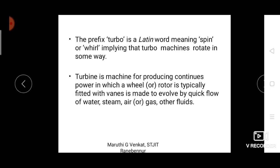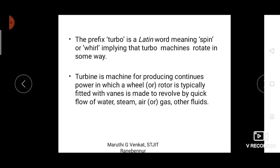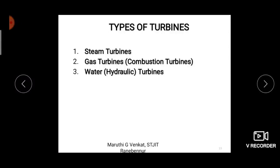The word turbine is derived from the Latin word 'turbo' which means spin or wheel, meaning turbines are machines which produce rotational motion. Turbines are machines mainly used to produce continuous power, provided with vanes or blades attached to a wheel or rotor. When water or gas with high velocity strikes the turbine blades, the rotor makes a rotational motion, producing mechanical energy.